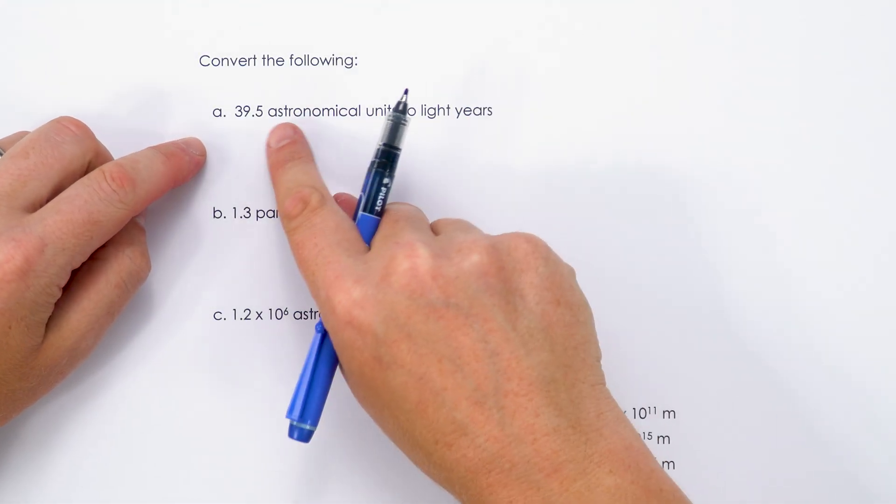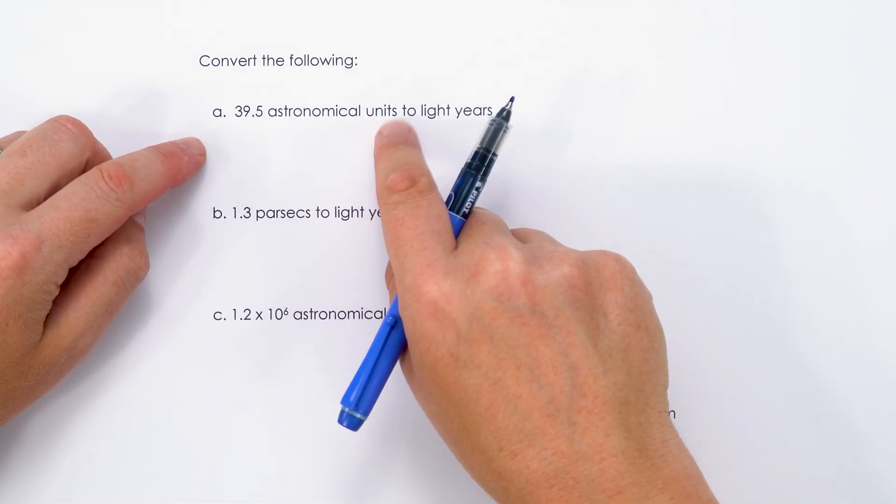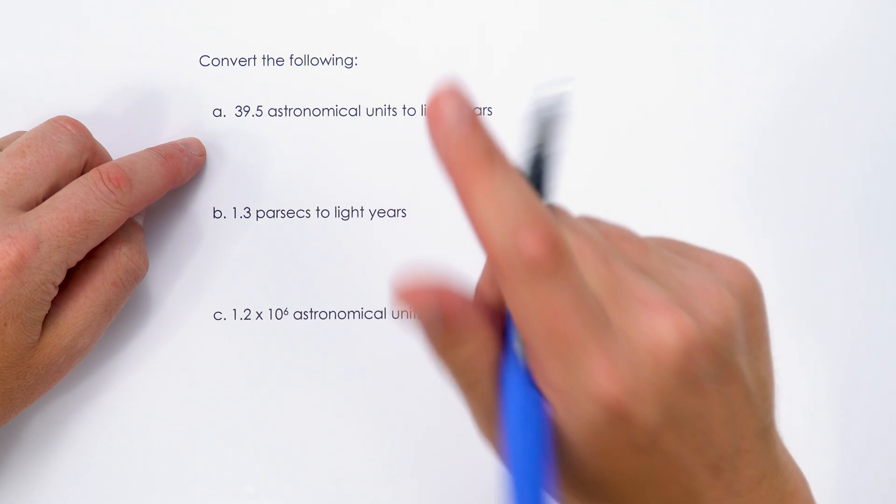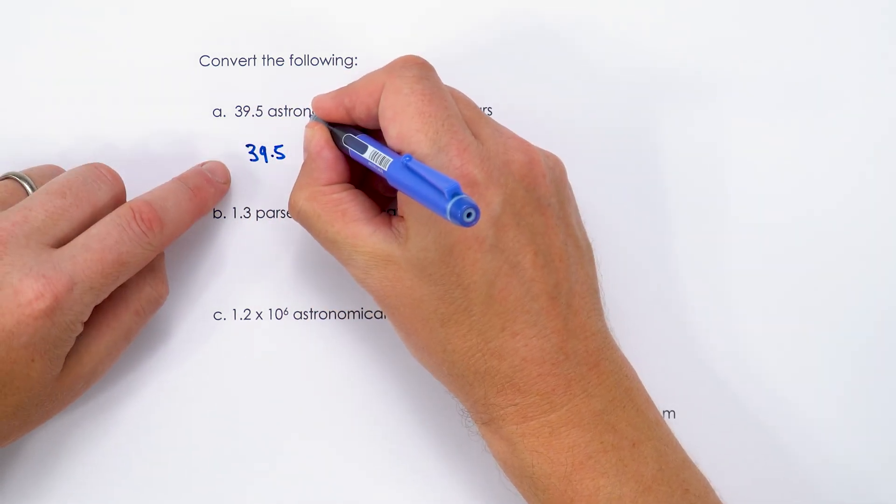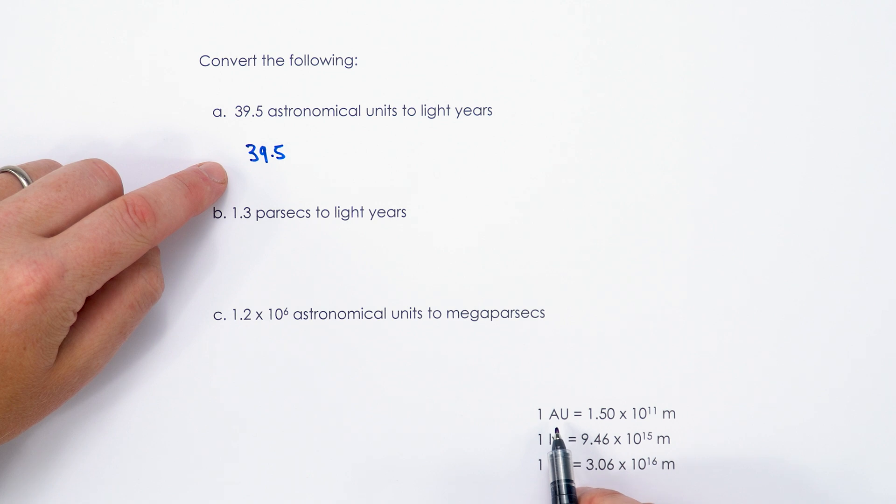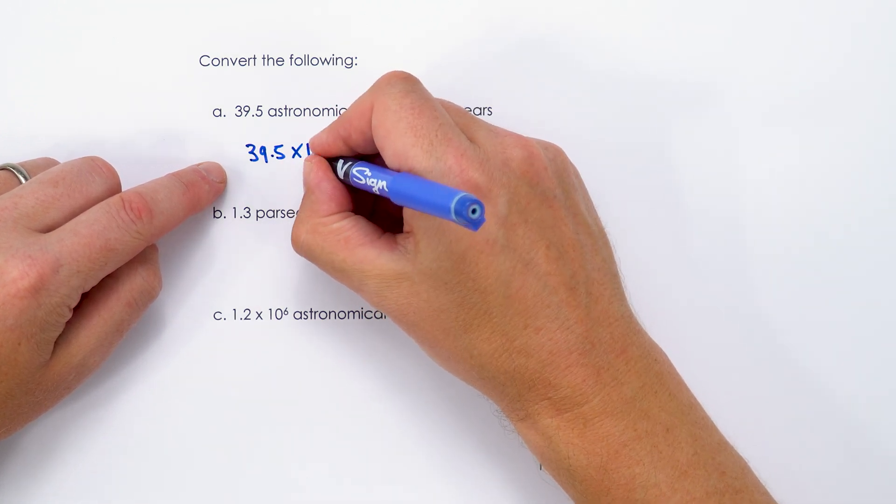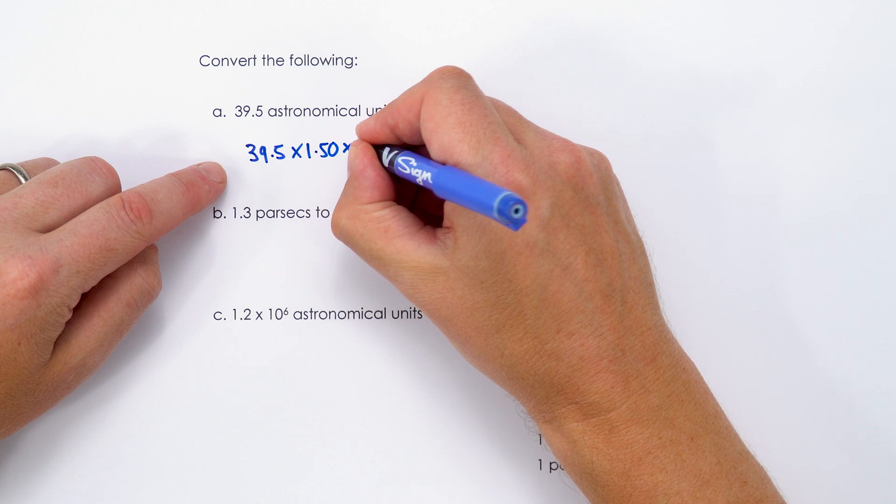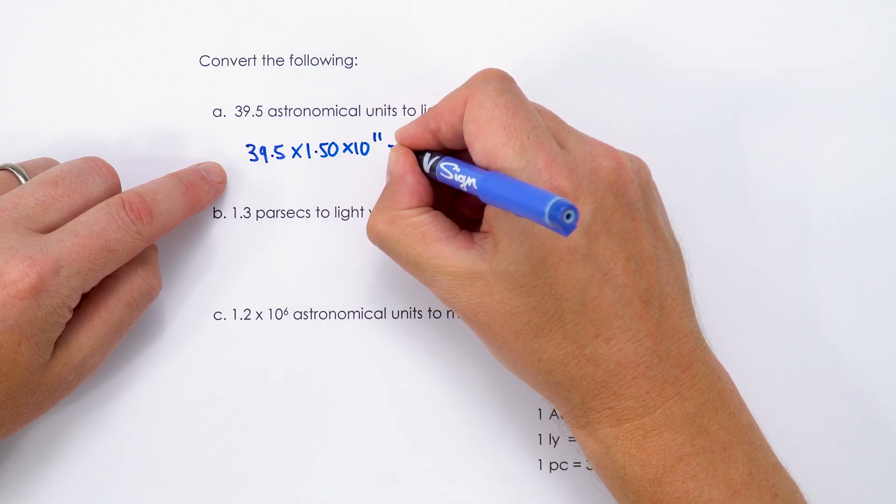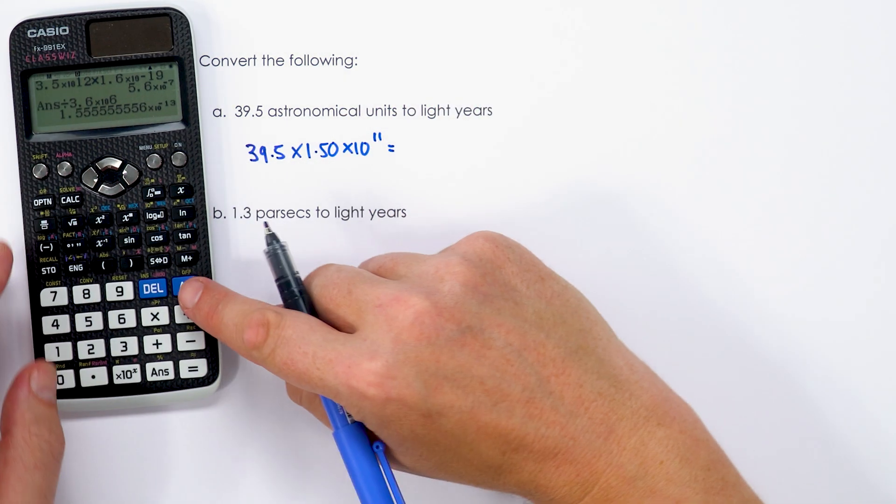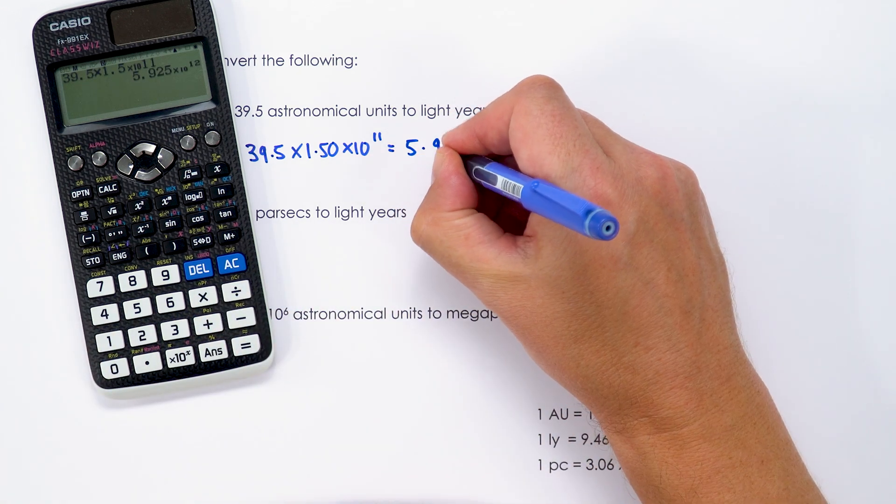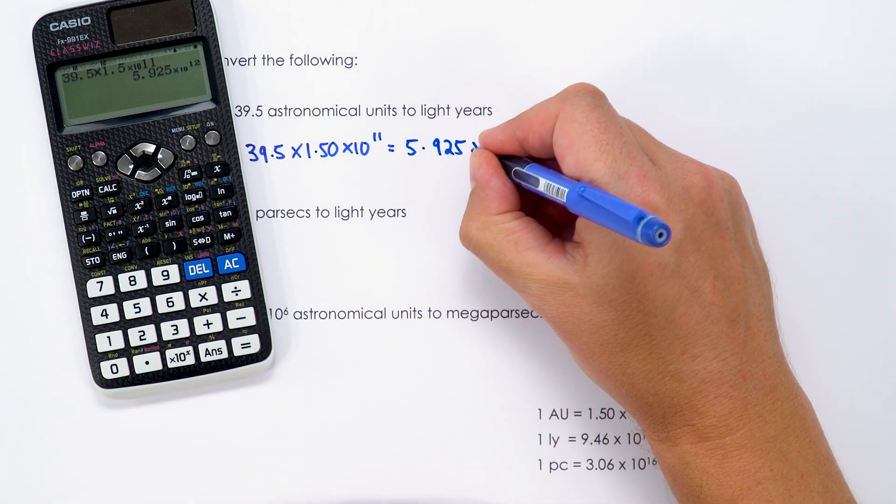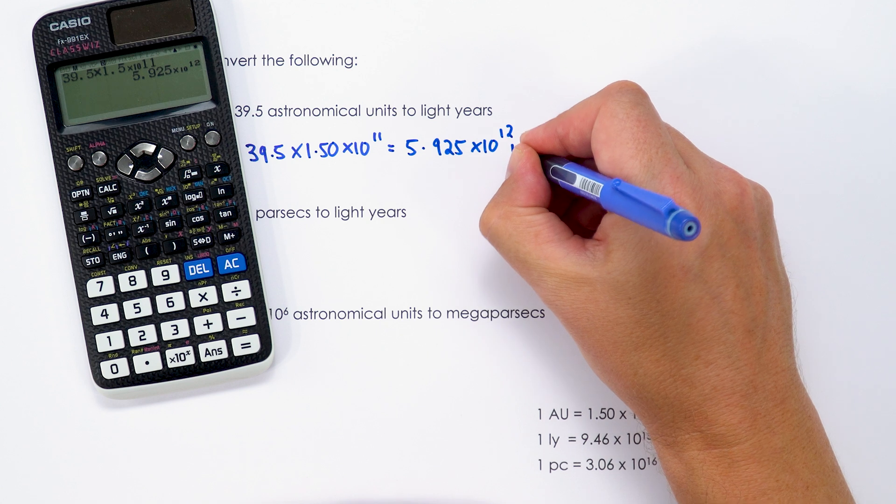So my approach is going to be to convert from astronomical units into metres and then from metres into light-years. So if we've got 39.5 astronomical units, where one astronomical unit is 1.50 times 10 to the 11 metres, I'm just going to multiply that by 1.50 times 10 to the 11, and that's going to give me a distance equal to 5.925 times 10 to the 12 metres.